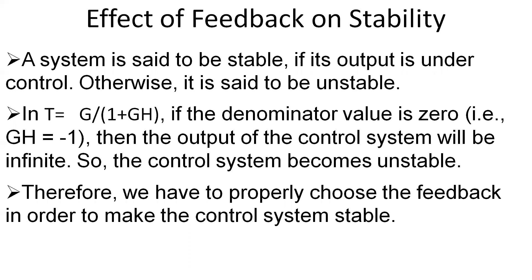Regarding the effect of feedback on stability: a system is stable if its output is under control and does not become unbounded. For the transfer function 1 / (1 + GH) of a negative feedback control system, if the denominator equals zero — which happens when GH = −1 — then the output becomes infinite, making the system unstable. Therefore, we must properly choose the feedback elements in G and H, whether RLC, RC, RL, or LC components, to ensure stability.